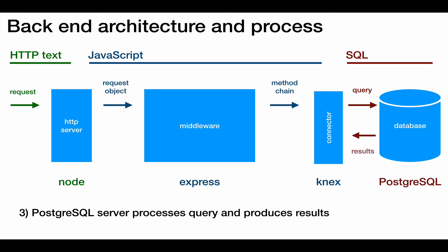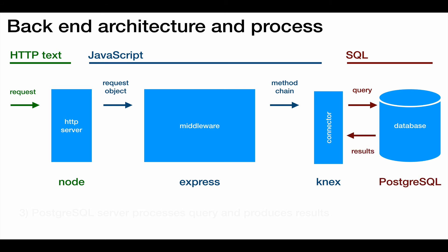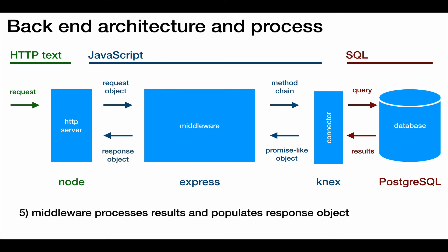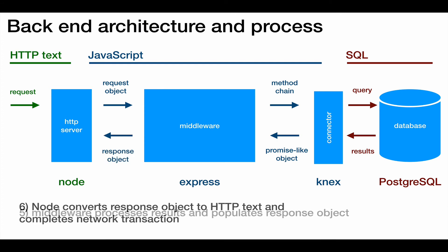The database server processes the query and returns a result. Connects returns the result as a promise-like object back to the middleware. The middleware decides on the correct response and populates the response object. Node converts the response object back to HTTP text and completes the transaction.